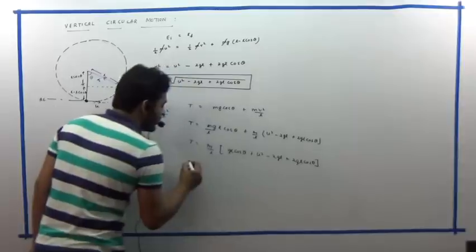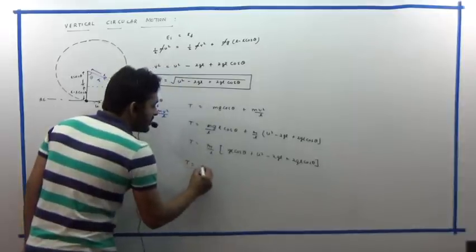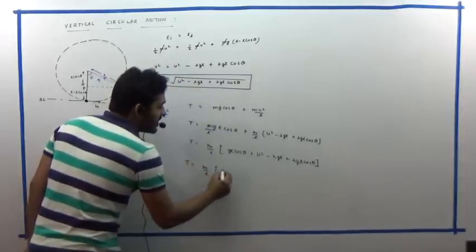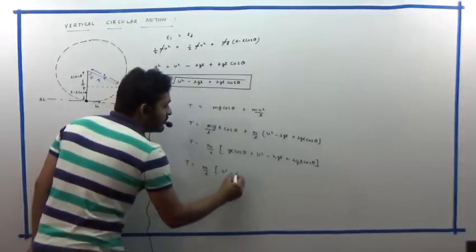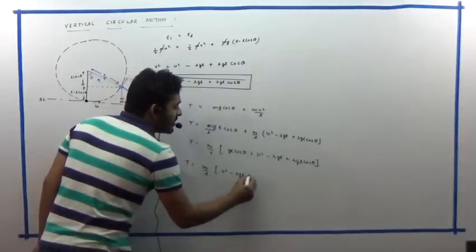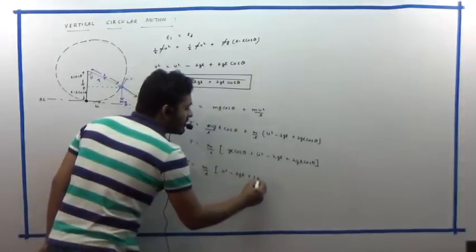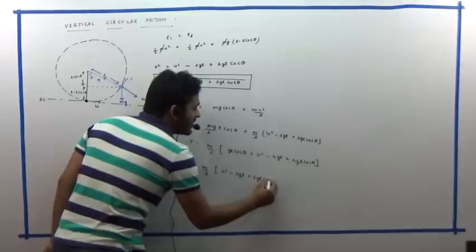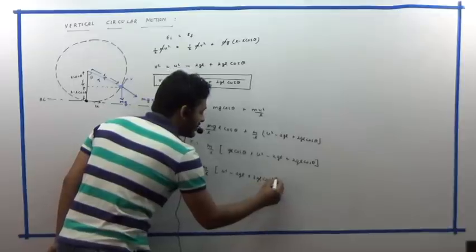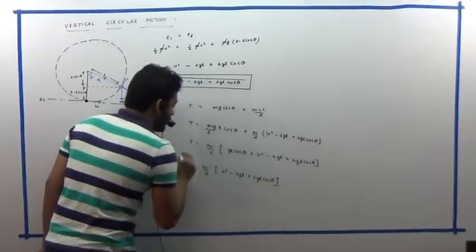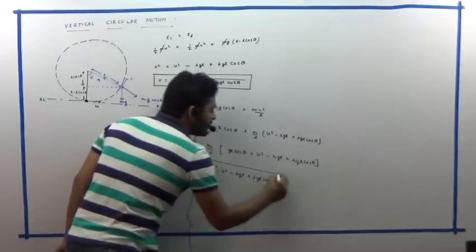After simplification, we obtain T = (m/L)(u² − 2gL + 3gL·cosθ). Using these two equations — for velocity and tension — we can predict everything about vertical circular motion.